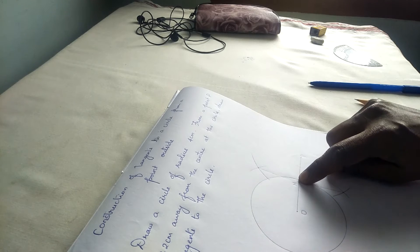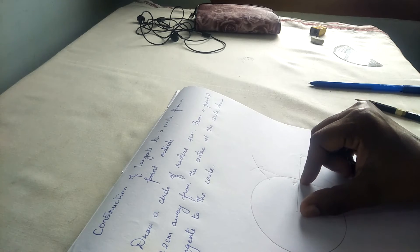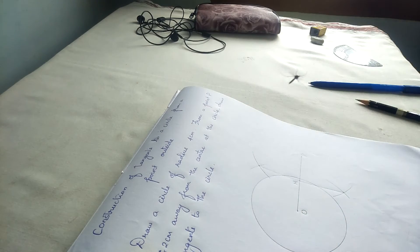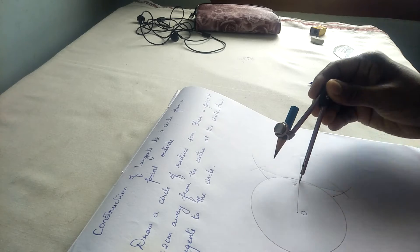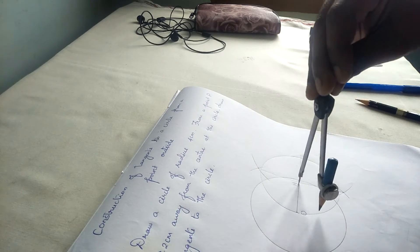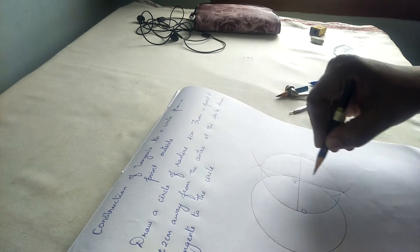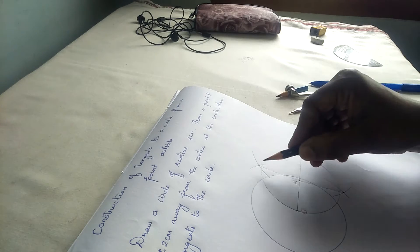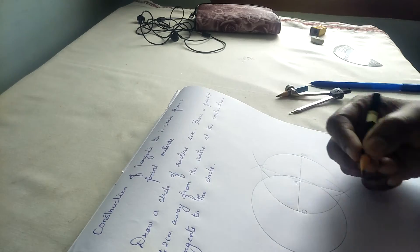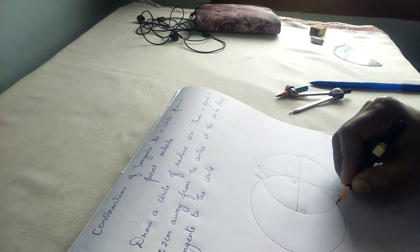Now, taking M as center, we are going to use M as center with radius OM. By taking radius OM and center M, let's draw a new circle. The new circle intersects the previous circle at two points. Let's name these points as Q and Q dash.